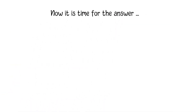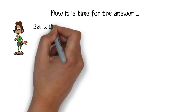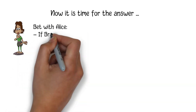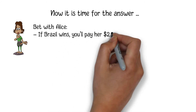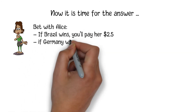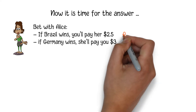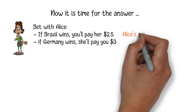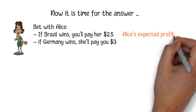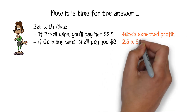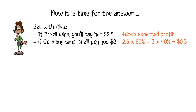Now it is time for the answer. You can make the following bet with Alice: if Brazil wins, you'll pay her $2.50; if Germany wins, she'll pay you $3. Alice will be happy to agree with this bet because her expected profit is 2.5 × 60% − 3 × 40% = 30 cents.